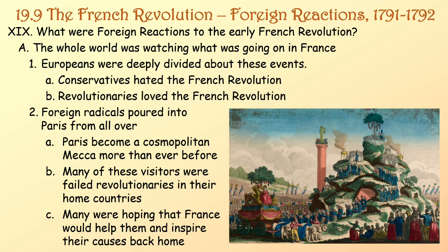What were foreign reactions to the early French Revolution? The whole world was watching what was going on in France. Europeans were deeply divided about these events. Conservatives hated the French Revolution; revolutionaries loved it. Foreign radicals poured into Paris from all over, and Paris became a cosmopolitan mecca more than ever before. Many of these visitors were failed revolutionaries from their home countries — for example, Belgium and Poland — hoping that France would help inspire their causes back home.